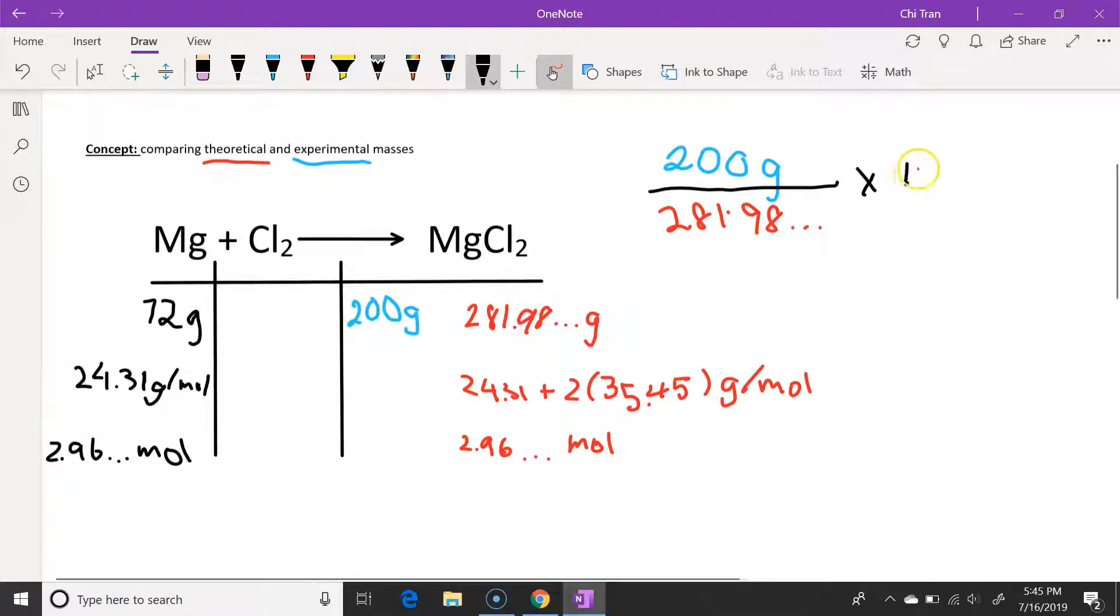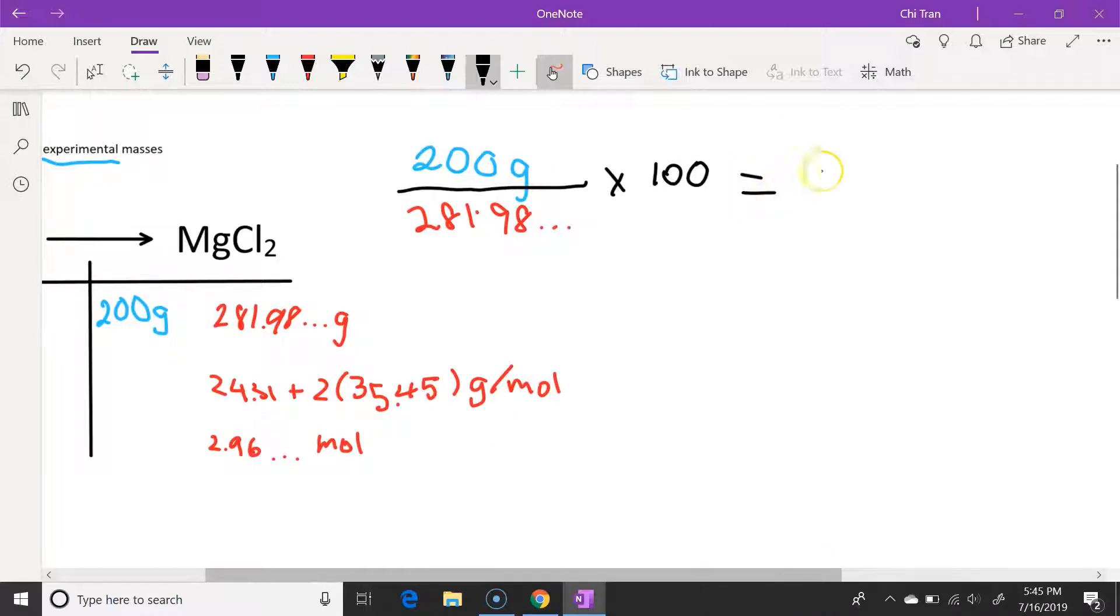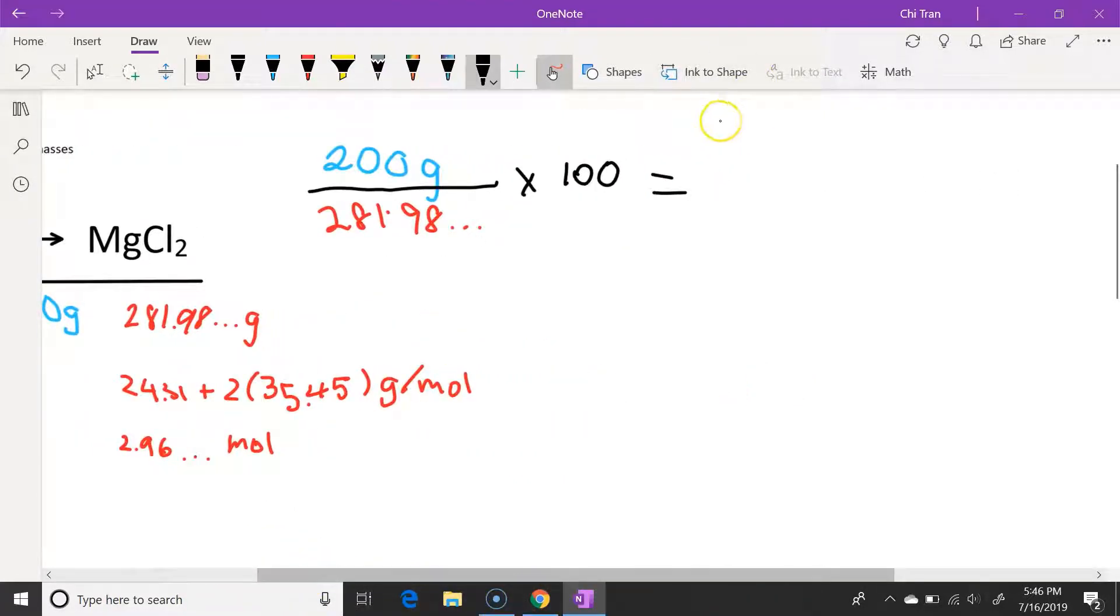We can take the experimental grams divided by the theoretical grams and times 100 to get percentage yield. And the first number that is given in the question is 72 grams which has two significant figures. So our answer must be rounded up to two significant figures as well. And so that would give our answer of 71%.